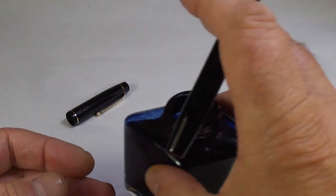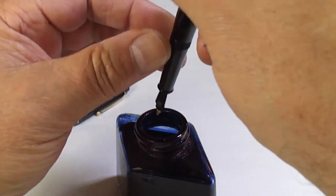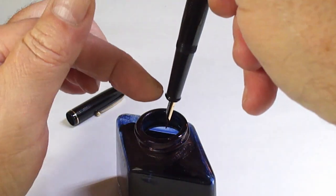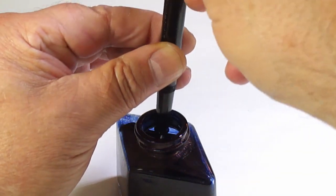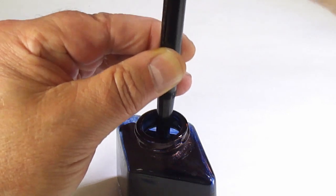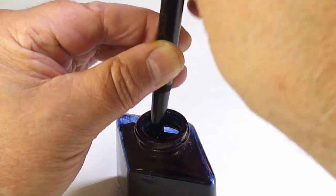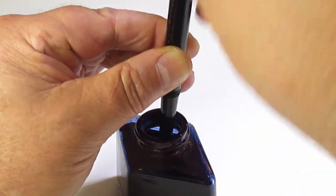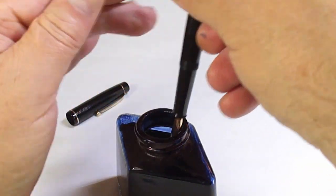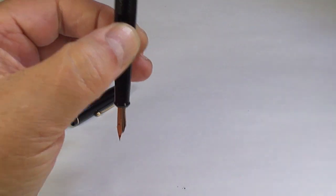Now what we'll do, as we always do, let's show you how it actually fills. So what I'm going to do, putting the nib over the ink, I'm going to unscrew the plunger first, pull the plunger out and press down.